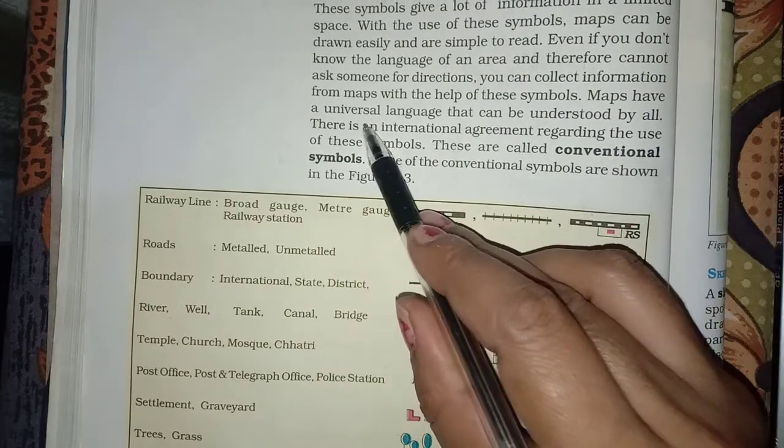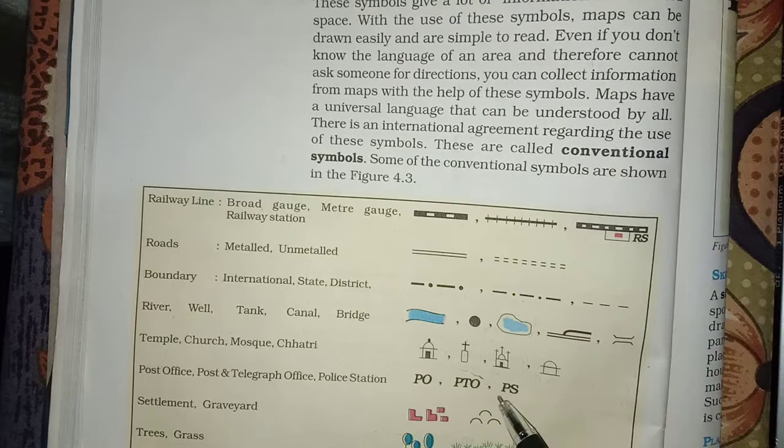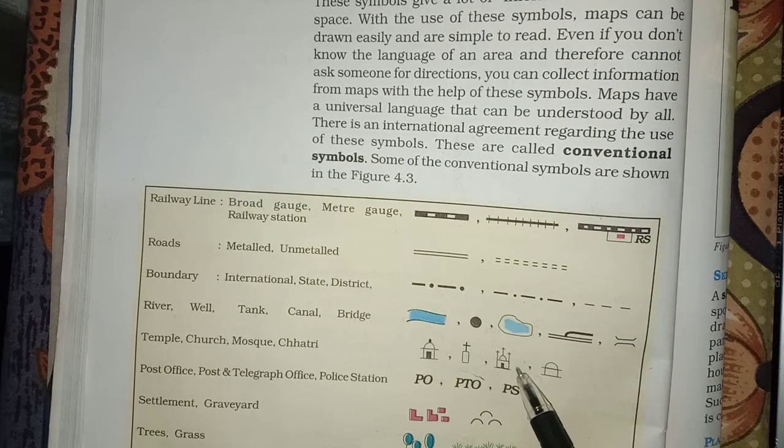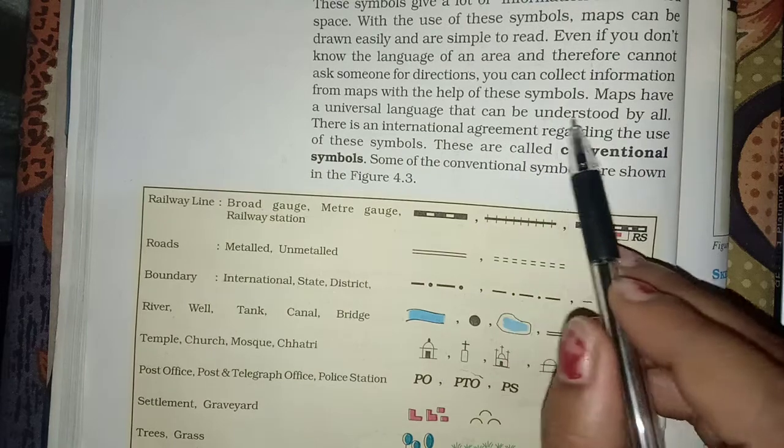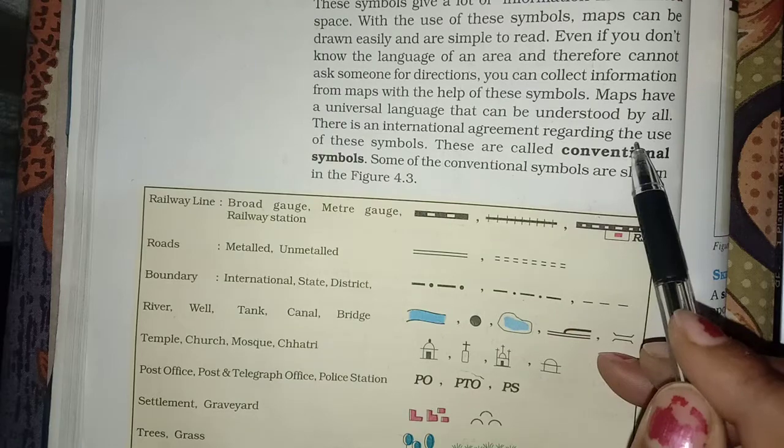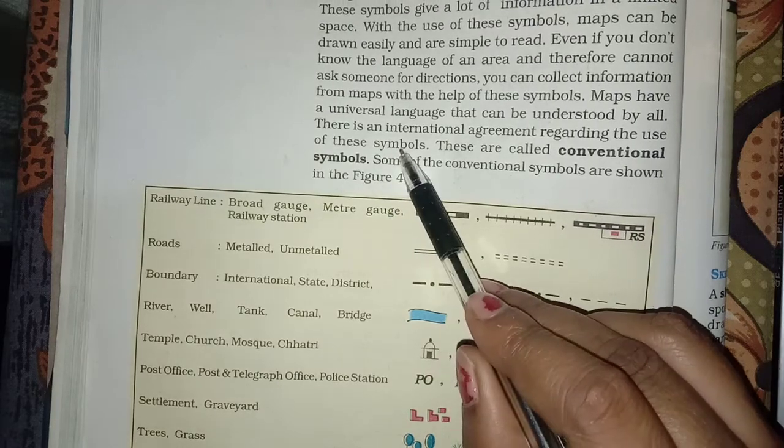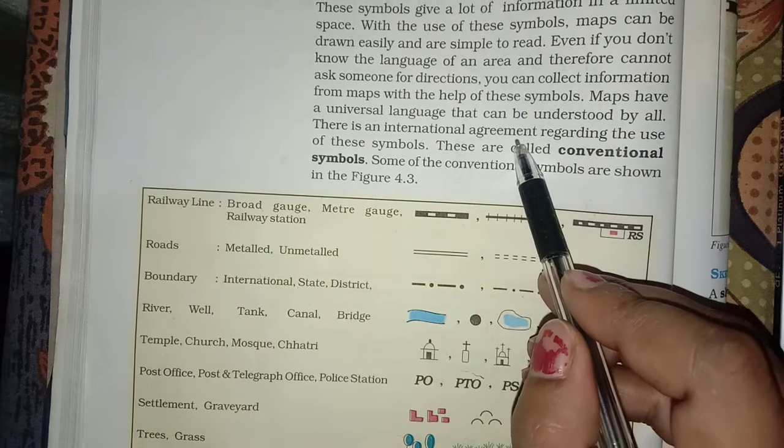Maps have a universal language that can be understood by all. The map is universal language means that it is such a language that everyone knows, so it can be understood easily. There is an international agreement regarding the use of these symbols.